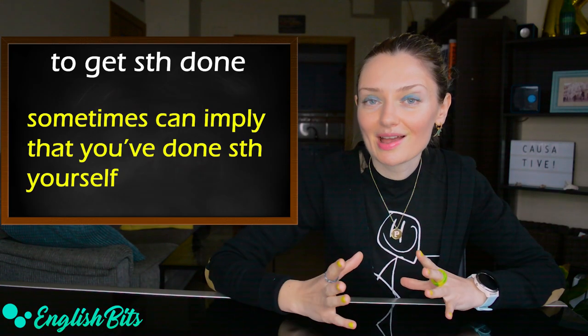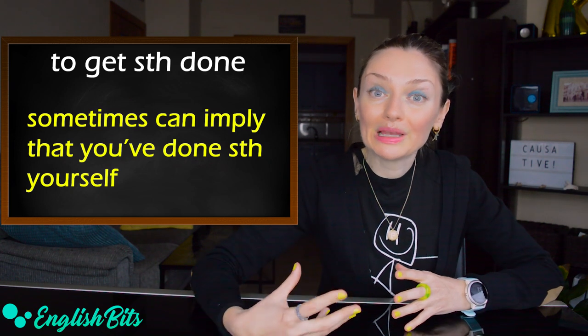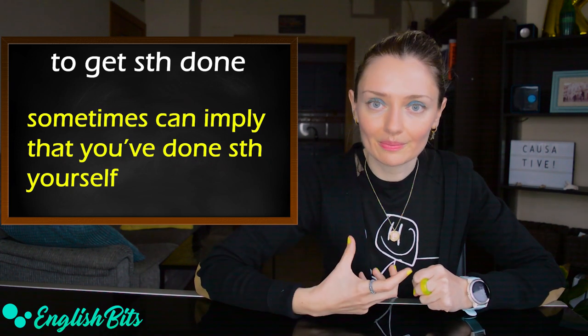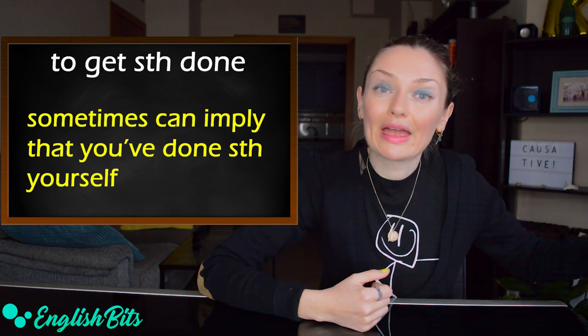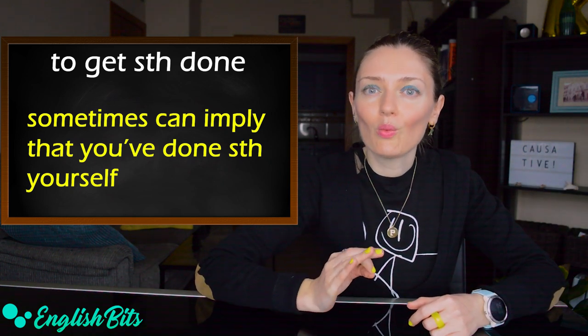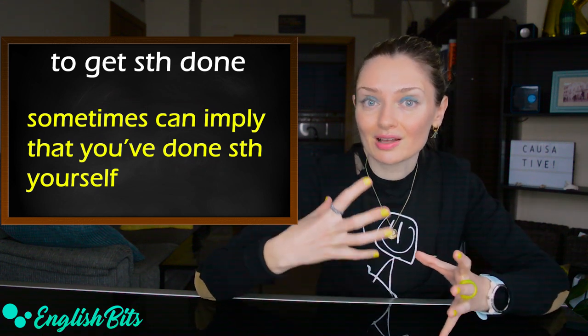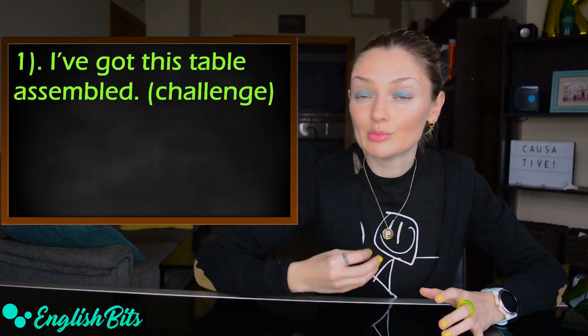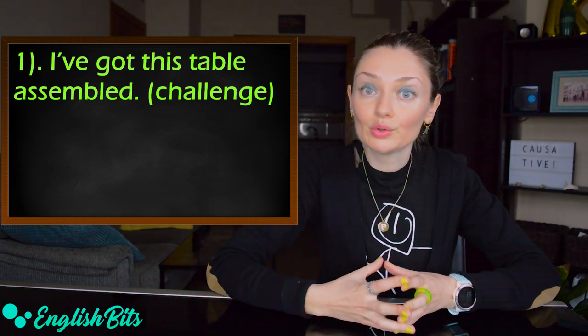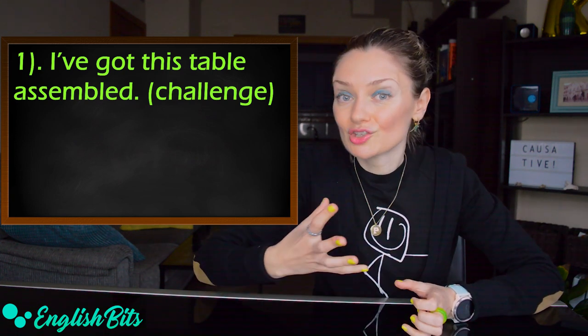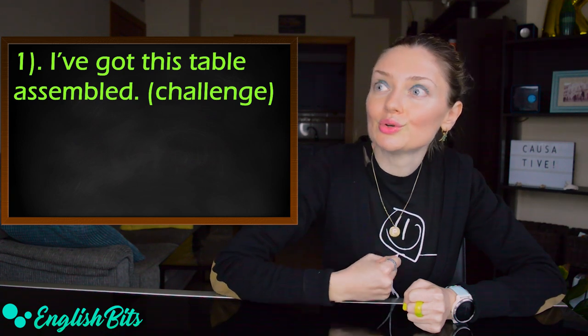And before we do a quiz, I want to tell you that sometimes to get something done can be also used to mean that you do something yourself. And it can be really tricky to know when you do something yourself or when someone else does something for you. Let's look at some examples when the meaning is that you did something yourself using the structure to get something done. The first example: I've got this table assembled. In this case, it means that I assembled this table myself. And we use this structure to show that it was challenging, but I managed to assemble the table. I managed to achieve my objective.